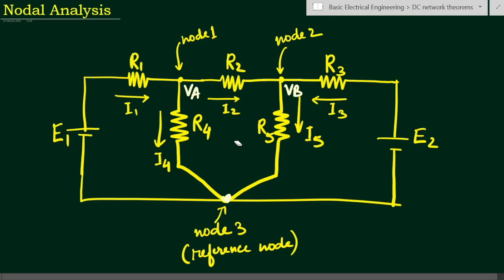In this network we have resistances R1, R2, R3, R4, and R5. We have considered currents I1, I2, I3 — I3 is in the opposite direction from right to left, I4 is top to bottom, and I5 is also top to bottom. The directions are shown with arrows. We have two EMF sources E1 and E2, and we have to find out the branch currents.